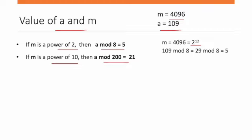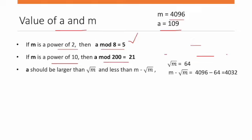Is 109 mod 8 equal to 5? Yes, 109 mod 8 equals 5, so this condition is satisfied. Next, a should be larger than the square root of m. The value of a is 109, and the square root of m is 64, so 64 < 109.